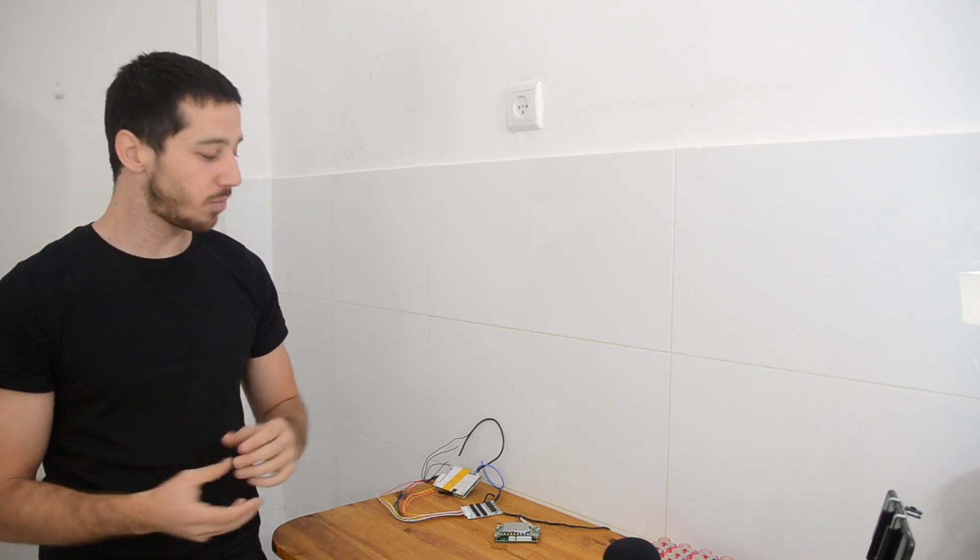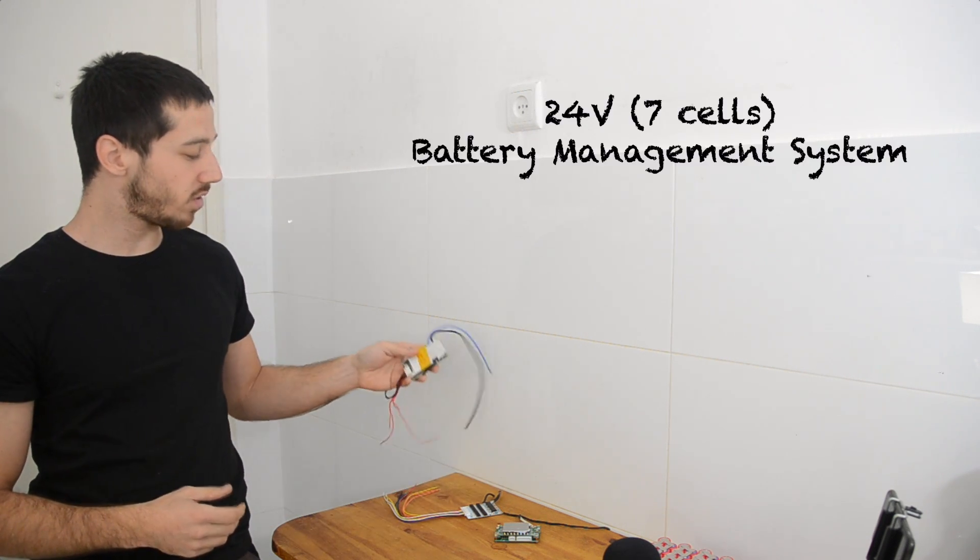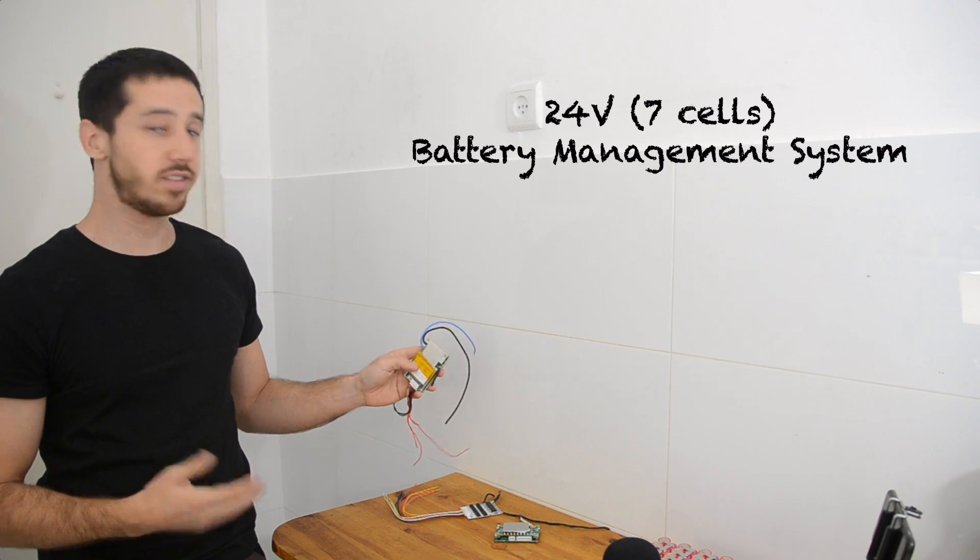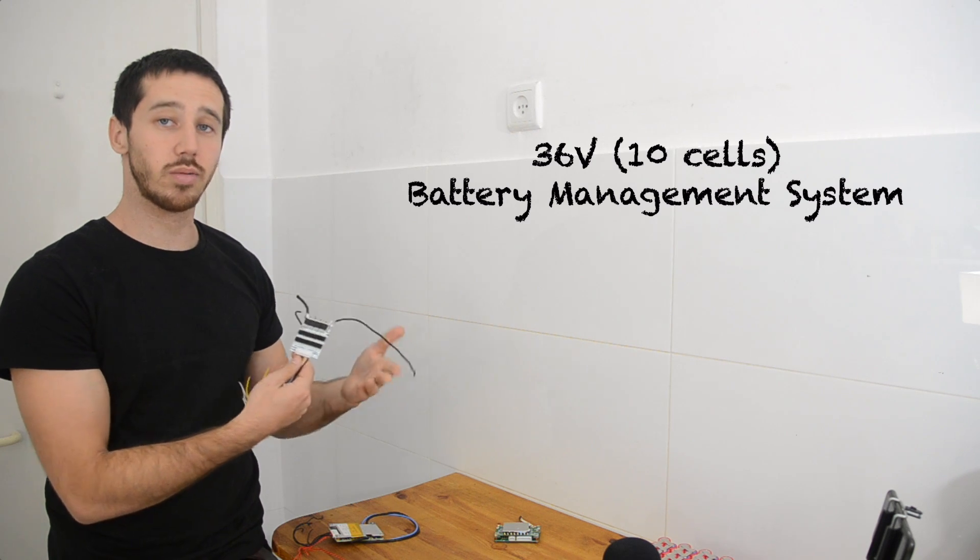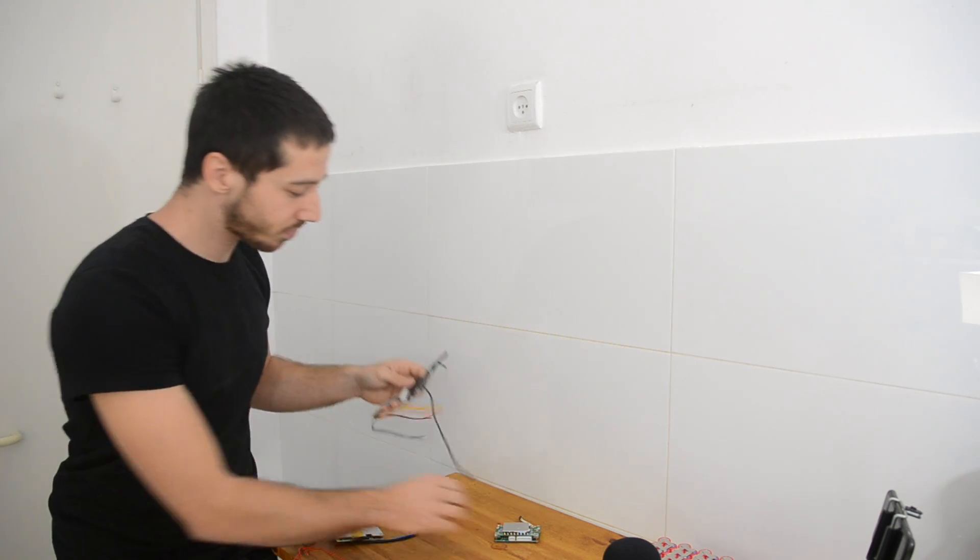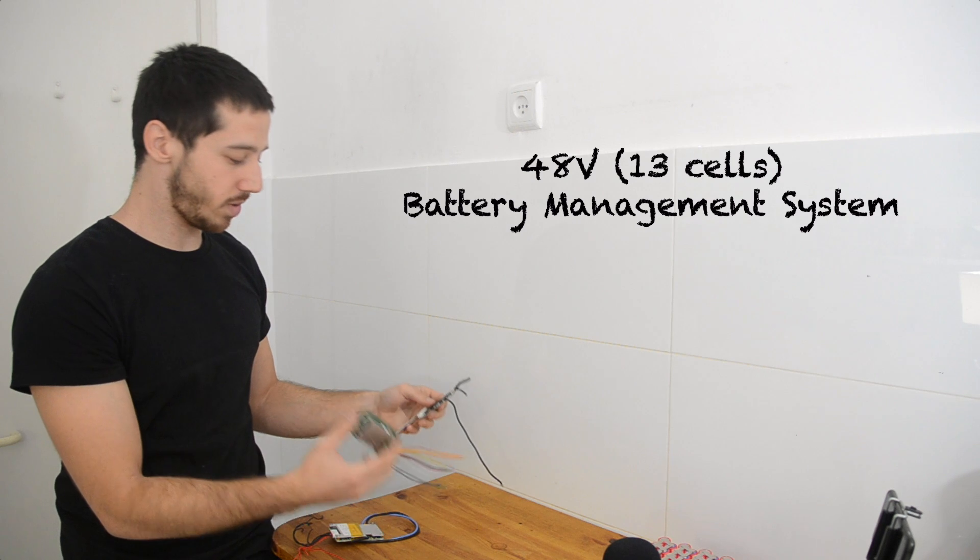Now I've got a few BMSs here, or battery management systems, to show you. This is a 24 volt BMS, a 7-cell BMS. Here I've got a 36 volt BMS, which is going to be what I'll put on my battery in a moment. And then here's a 48 volt BMS.